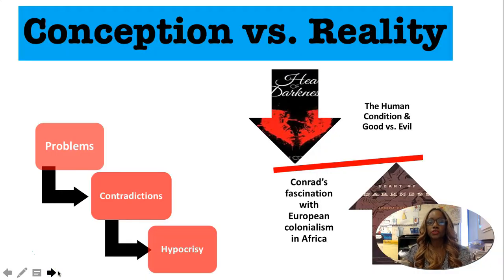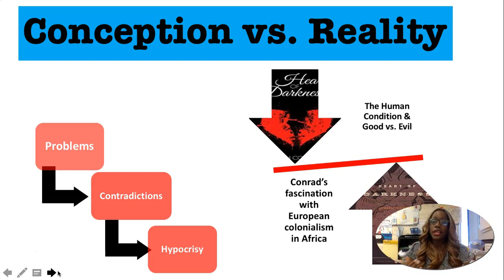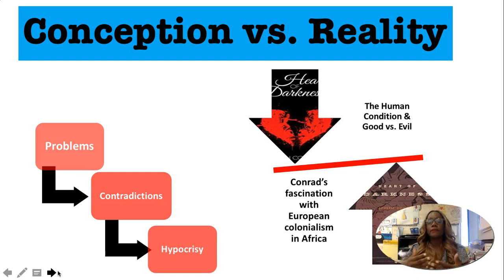And here is where we struggle, because it's this whole idea of conception versus reality. Many critics believe that Joseph Conrad had two purposes when constructing Heart of Darkness: one is to examine the human condition and to recognize the good versus evil in the world and even within ourselves, but also his fascination with European colonialism in Africa. There is the conception — we're there to civilize the people, to help everyone — and the reality: the torture, the violence. We begin to see the problems, contradictions, and hypocrisy that exist in the Congo River.